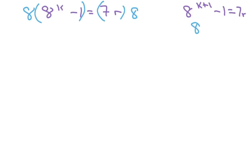I'm going to write n equals k minus 1 equals 7r. Now, to get it to look like 8 to the k plus 1 minus 1 equals 7r, what I'm going to do is multiply both sides by 8. And that's because 8 times 8 to the k equals 8 to the k plus 1, which is what we want here.